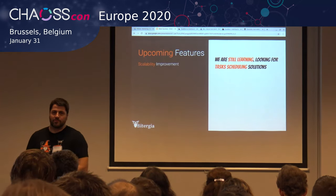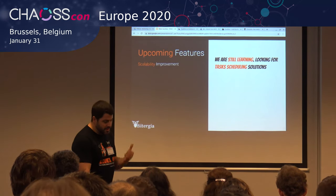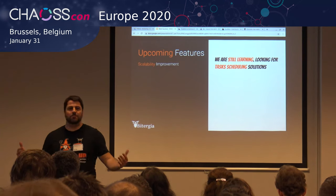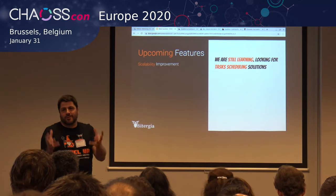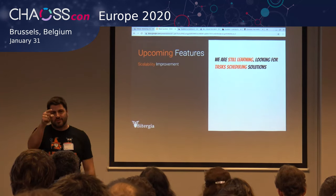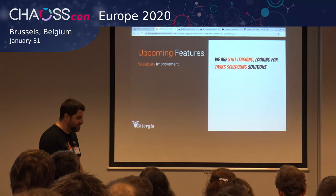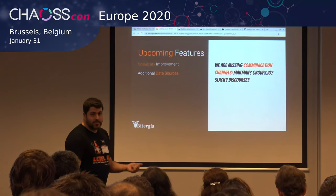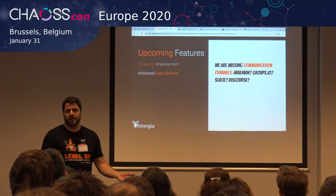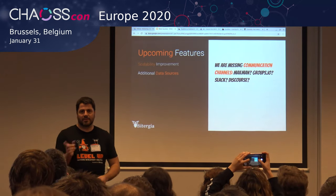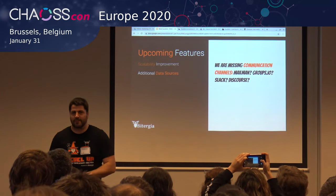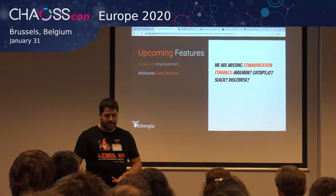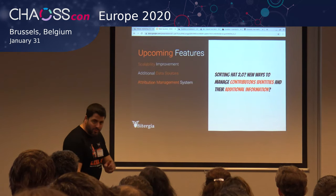There are upcoming features we'd like to improve. First, scalability — and I want to be fair: we don't have any clue about Kubernetes, but people tell us we should be using it. So if anyone in the room thinks we should use Kubernetes a certain way, we're more than welcome to listen. We have our own scheduler that provides workers to run tasks in parallel. We'd also like to add new data sources — we're missing communication channels, which are very important. Which ones would you like to see? Mailman? Groups.io? Slack? Discourse? I love Discourse.